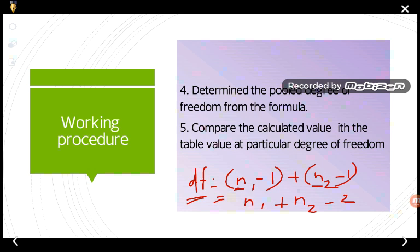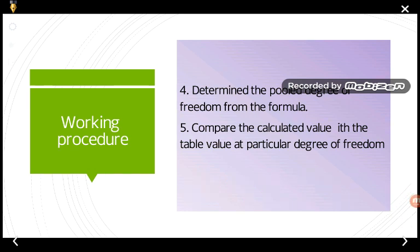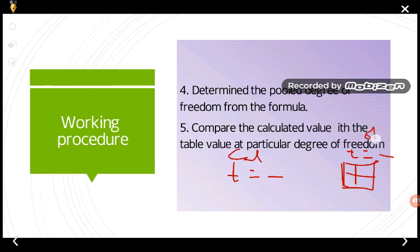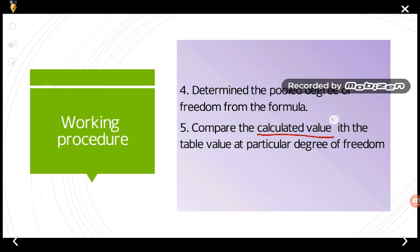Step five: compare the calculated t-value with the table value at the particular degree of freedom. A tabulated value is given, and we compare our calculated value with the table value. In this way we work with the unpaired data, following the five steps for calculating the unpaired t-test.